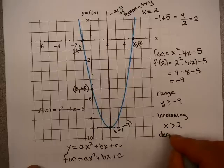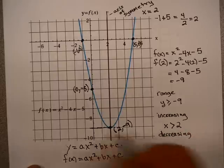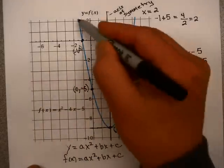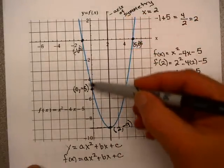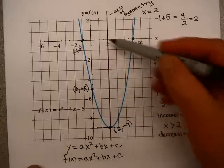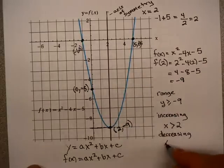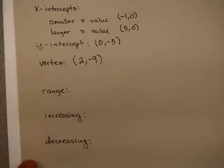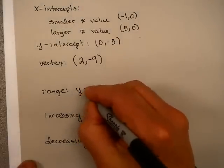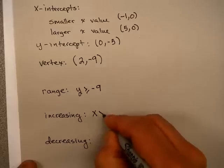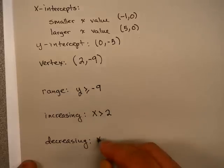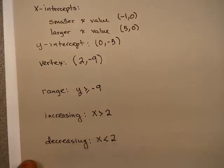Decreasing is the opposite of that. That means as you move from left to right on the x-axis, the values of the graph are going down. It's clearly decreasing until we reach this point 2. So we would say it's decreasing from x is less than 2. So I'm going to add those values in here. The range was y is greater than or equal to negative 9. It's increasing from x is greater than 2 and decreasing from x is less than 2.